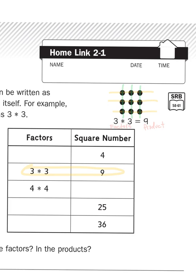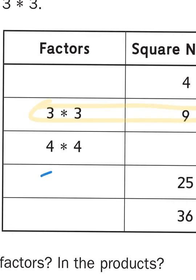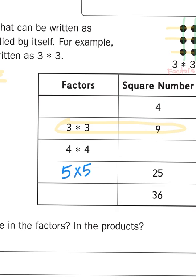So what do you suppose would follow 4 times 4 if the previous pair of factors are 3 times 3? Well, you guessed it. It would be 5 times 5. So that means that 5 times 5 must be 25.